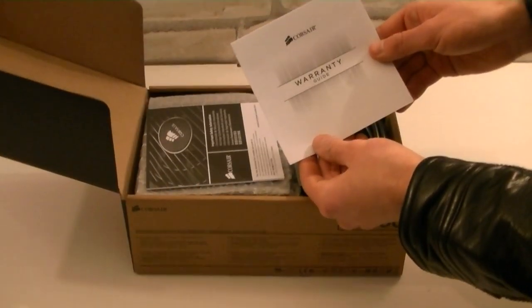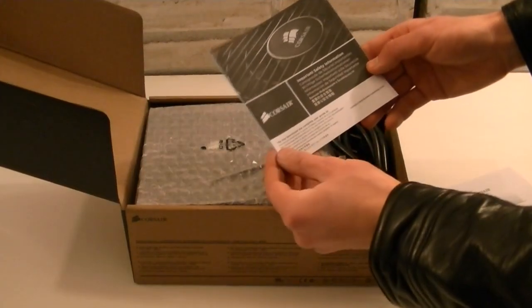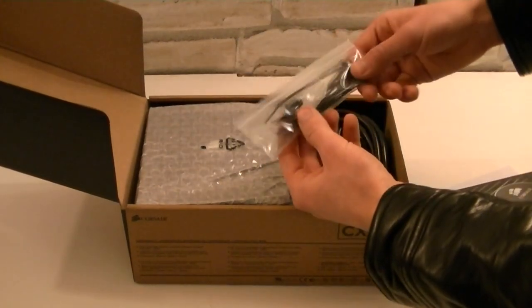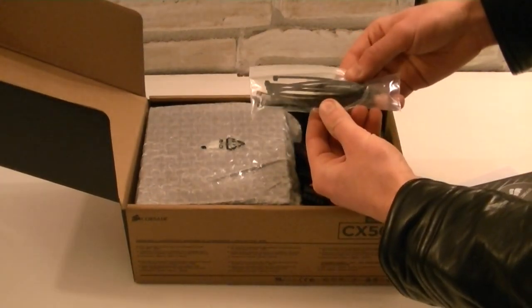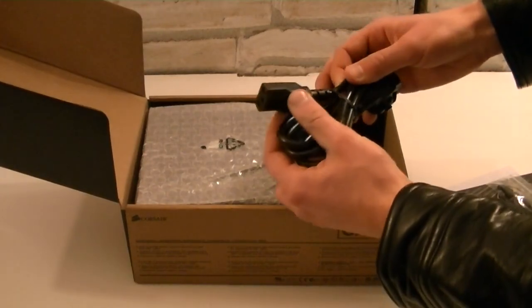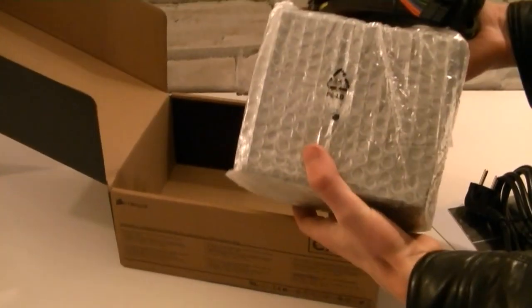In the box you get the Corsair Warranty Guide, security information, then right here is a plastic bag with four black screws and cable binders, here is the power cord and lastly the power supply itself.